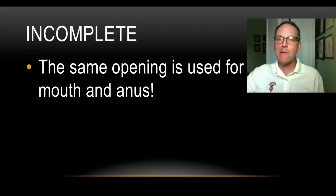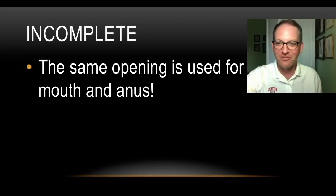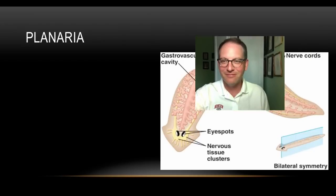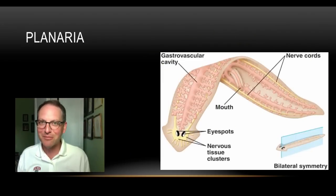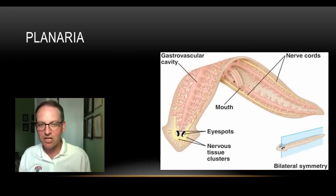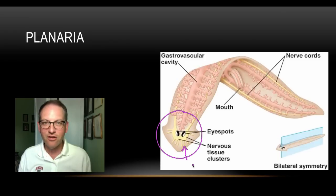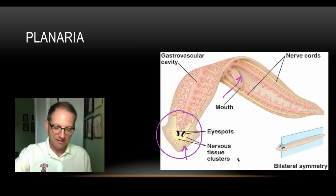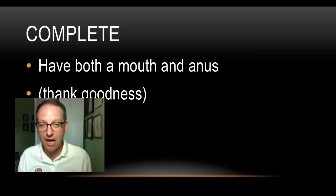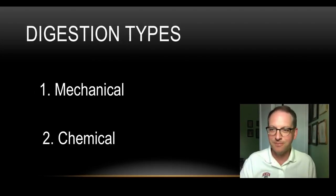Here's an animal that has an incomplete digestive tract — this is a little tiny flatworm, about an eighth of an inch long. If we look carefully, there's no mouth right here; this is the head area of the animal. The mouth is kind of in the center of the animal, and this same opening also serves as the anus — but that's how it was designed. Fortunately for us, we have a complete digestive tract where there is both a mouth and an anus.